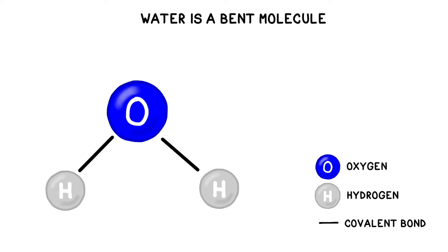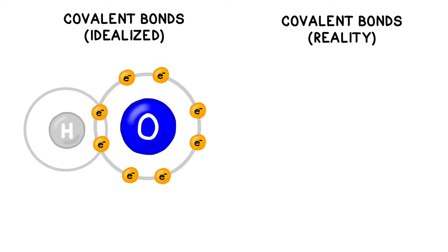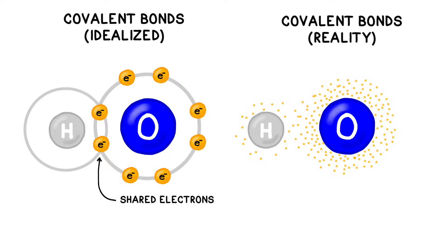Both oxygen and hydrogen contribute electrons to these covalent bonds, but the distribution is not equal. Let's zoom in on a pair of atoms that like to form covalent bonds, oxygen and hydrogen. You probably learned that a covalent bond looks like this in secondary school, but this is an idealized and simplified image. In reality, the electrons are constantly whizzing around and changing position.